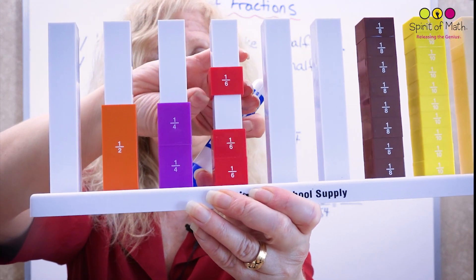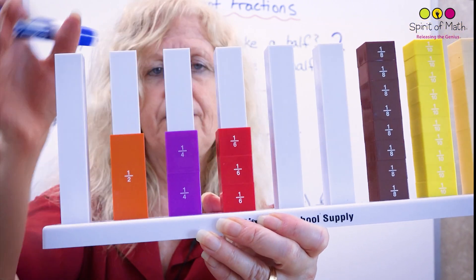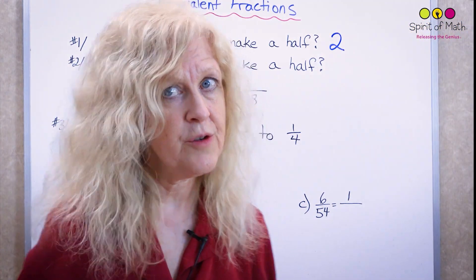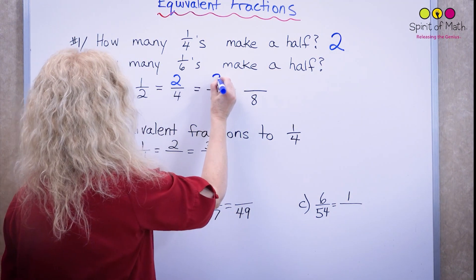And how many sixths made that one-half? Well, you've got one, two, three. Three sixths is the same as equivalent to one-half. So three-sixths.